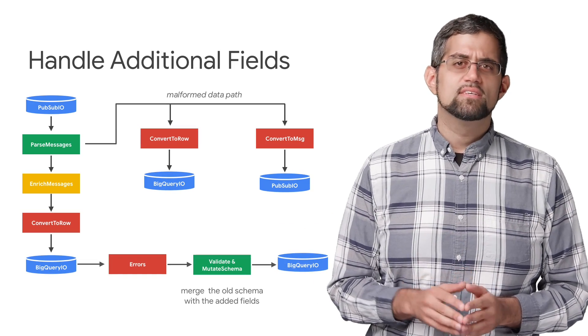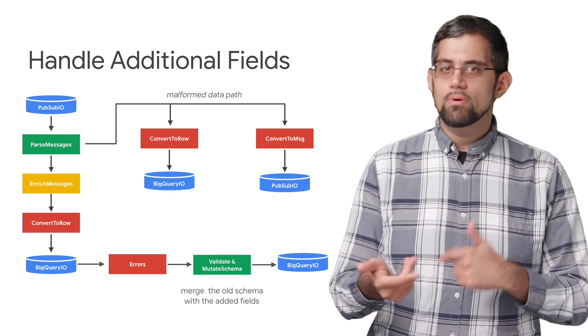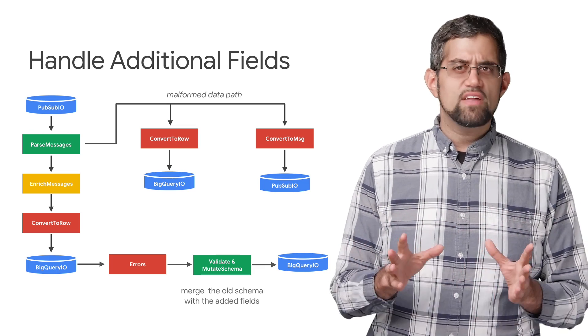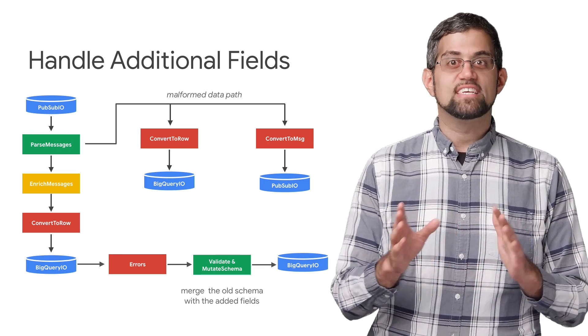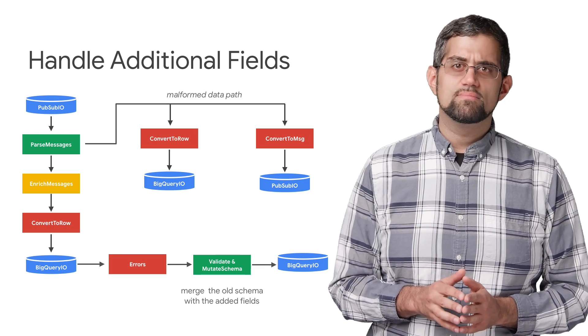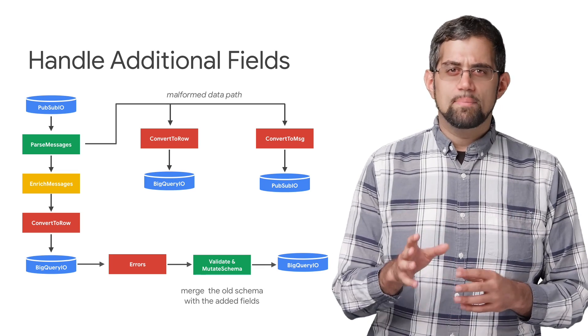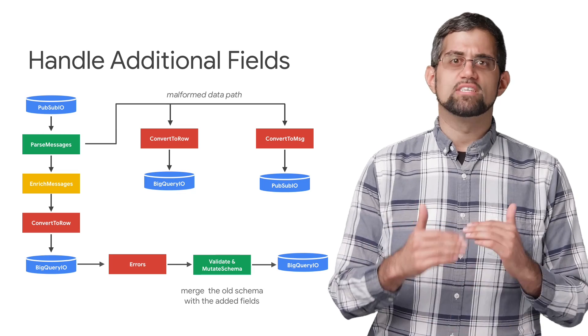Even when we protect against bad data, sometimes additional data comes in, but we actually still want to capture it. Thankfully, BigQuery allows for additive schema changes. If additional data comes in that goes beyond our original schema, we can have BigQuery update the fields without any downtime and reinsert it.